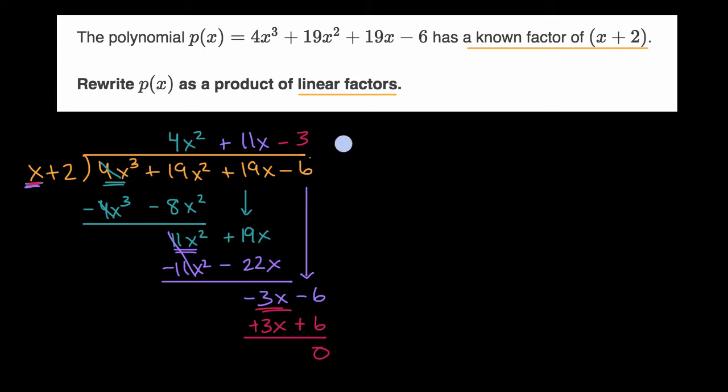And so we can rewrite p(x) now. We can rewrite p(x) as being equal to (x + 2) times all of this bit: 4x² + 11x - 3.